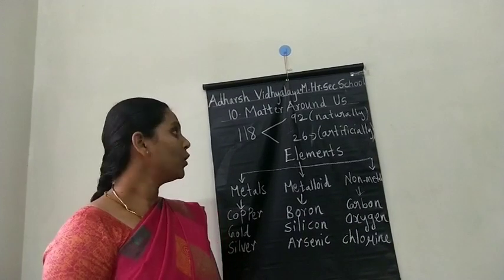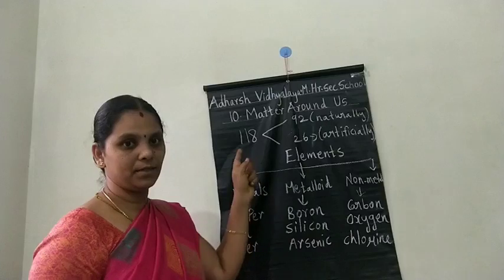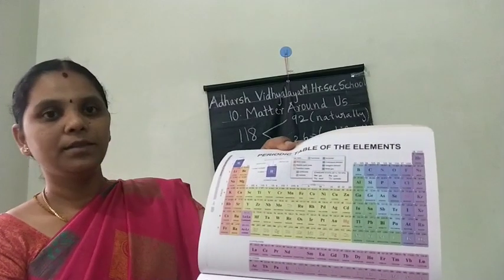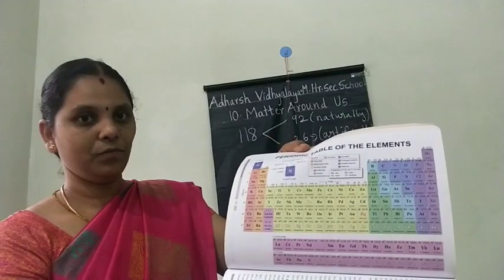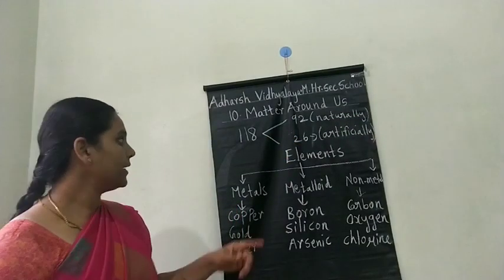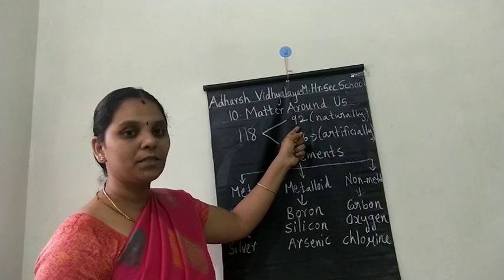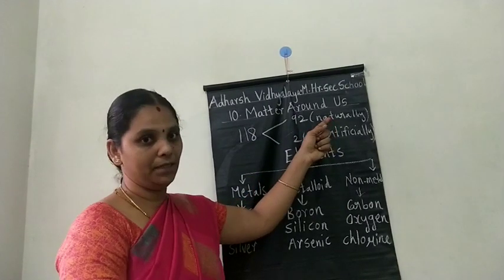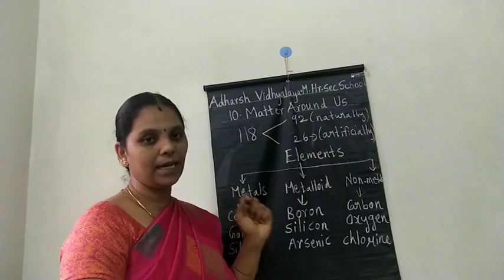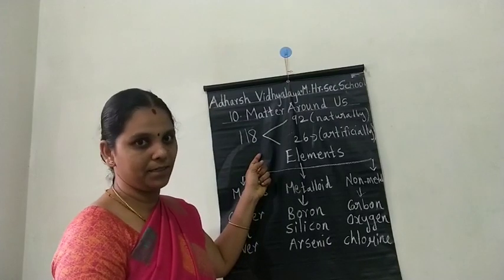In the modern periodic table, 118 elements are present. Out of 118 elements, 92 elements are naturally occurring, whereas 26 elements are artificially created.